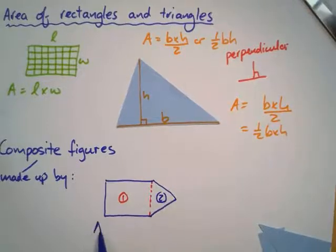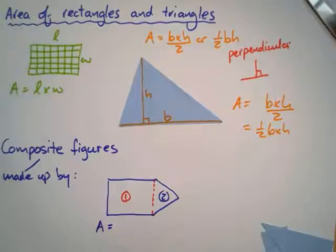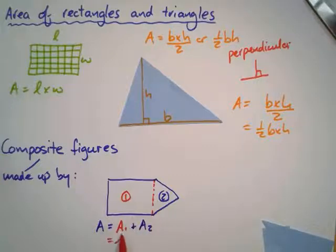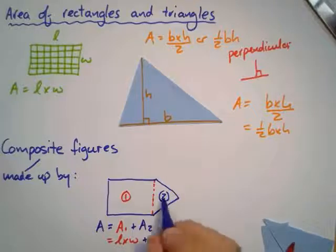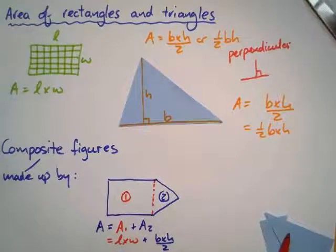And my area will be the area of figure one plus the area of figure two. For this, it is length times width plus the area for a triangle. It's base times height divided by two.